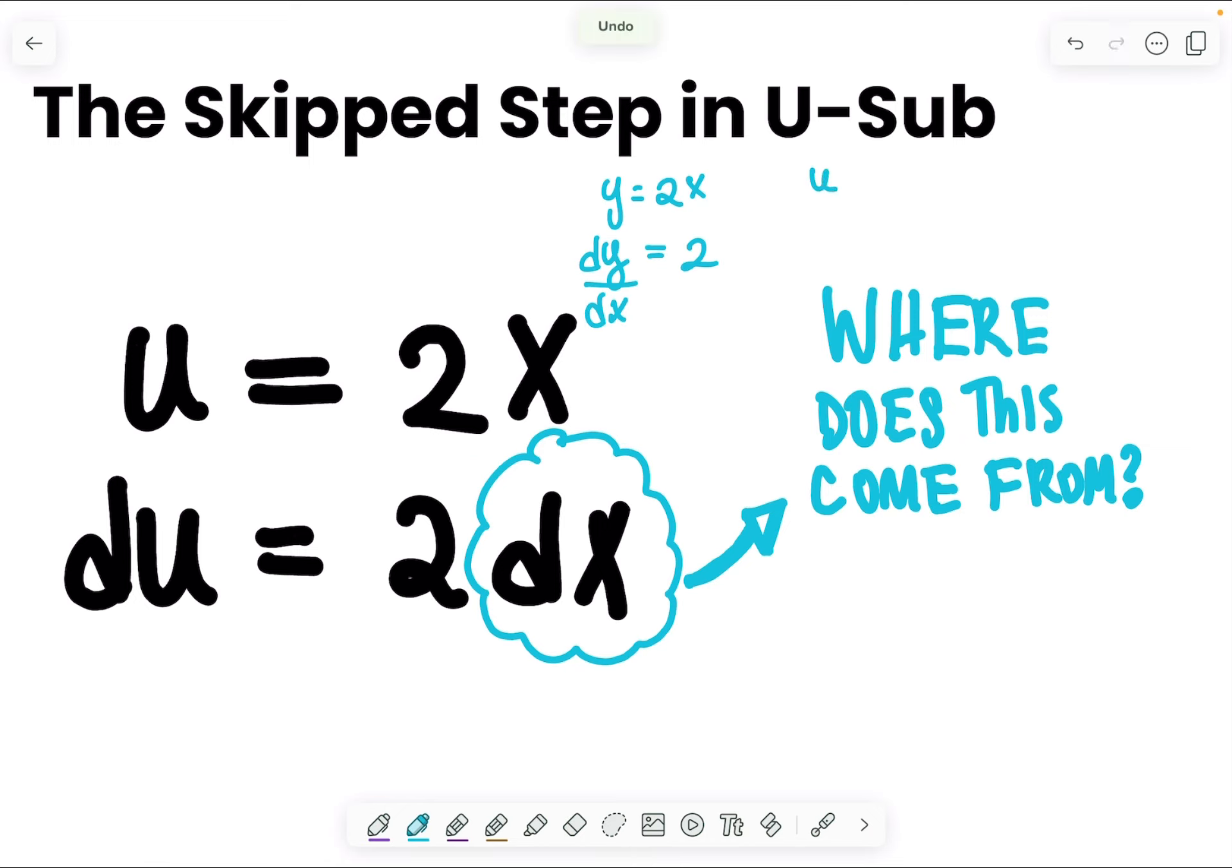This is u is equal to 2x. To find the derivative of u, I could say u prime, that's 2, or I could say the derivative of the function u with respect to the variable x because the terms in the function are x. Now, guess what I see over here?